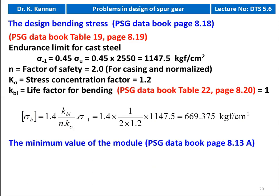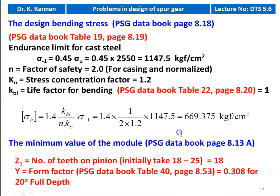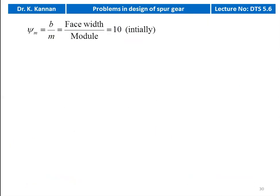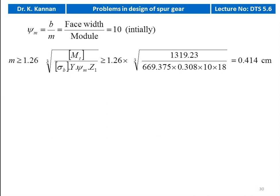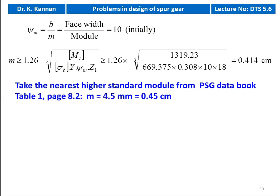We calculate the minimum module. The equation is available on page number 8.13a. We require the number of teeth on the pinion — we take initially Z1 = 18. Form factor for Z1 = 18 is Y = 0.308 from table number 40. ψM ≥ 1.26 × ∛[MT / (σB × Y × Z1)] = ∛[1319.23 / (669.375 × 0.308 × 10 × 18)] = 0.414 cm. We take the next higher standard module from the PSG data book table number 1.